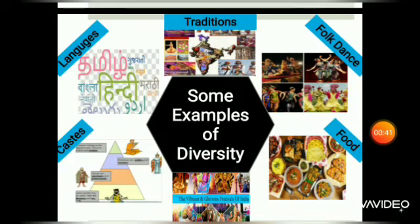Now, food is relished all over the world. Tamil Nadu is known for dosa, Gujarati cuisine for thepla and dhokla, Punjab for makki ki roti and sarson ka saag, and Maharashtra for Puran Poli. These are regional dishes known throughout the country, showing the great variety among the people.